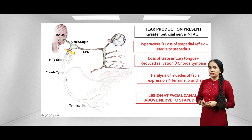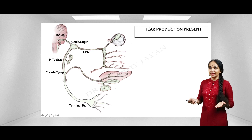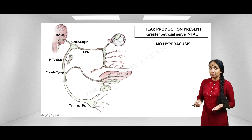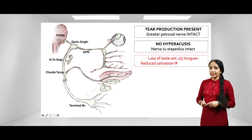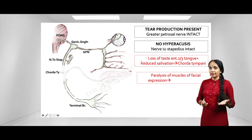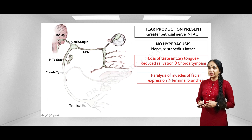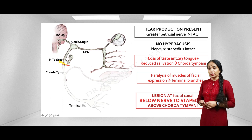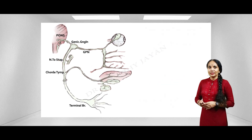Case 3: Tear production is present — greater petrosal nerve is intact. There is a normal stapedius reflex — nerve to stapedius is intact. However, there is loss of taste — chorda tympani is gone — and paralysis of muscles of facial expression. Since the nerve to stapedius is intact but the chorda tympani is lost, the site of lesion is in the facial canal below the nerve to stapedius but above the chorda tympani.